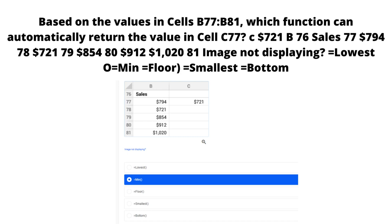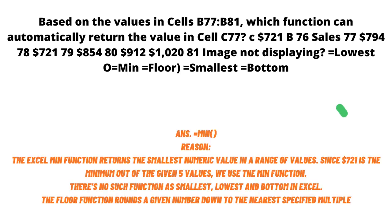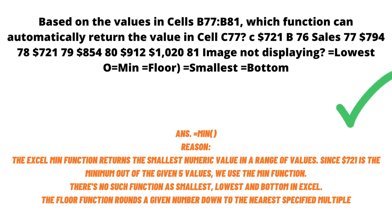The answer is the MIN function. The Excel MIN function returns the smallest numeric value in a range. Since 721 dollars is the minimum of the five given values, we use the MIN function. There is no such function as SMALLEST, LOWEST, or BOTTOM in Excel. The FLOOR function rounds a number down to the nearest specified multiple, so it is not the correct answer here.